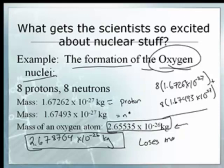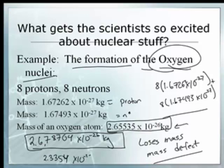See, when this atom forms, it loses mass. In fact, we have a name for that. It is called the mass defect. Everybody write mass defect. Mass defect. There is a lost amount of mass. That lost amount of mass, we would actually... Let's find... What is the lost amount of mass? If you subtract these two numbers... 2.678704 minus 2.65535. So 2.65535. We get 2.3354 times 10 to the negative 28. So you lose 2.3, whatever, times 10 to the minus 28 kilograms. What happens to that mass?